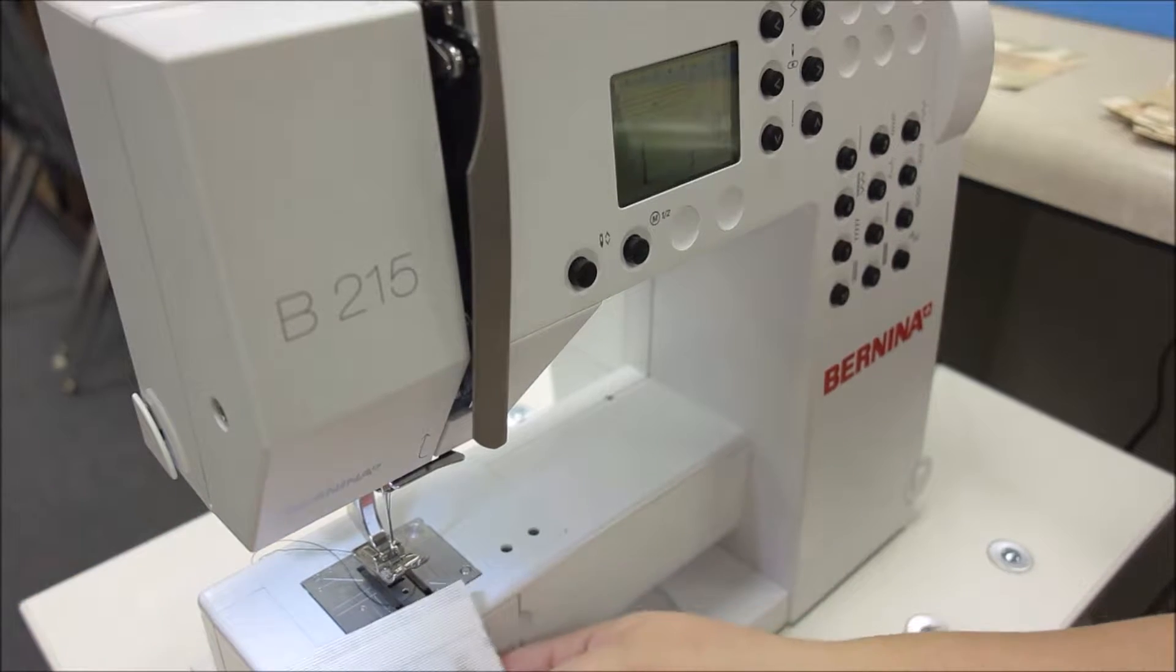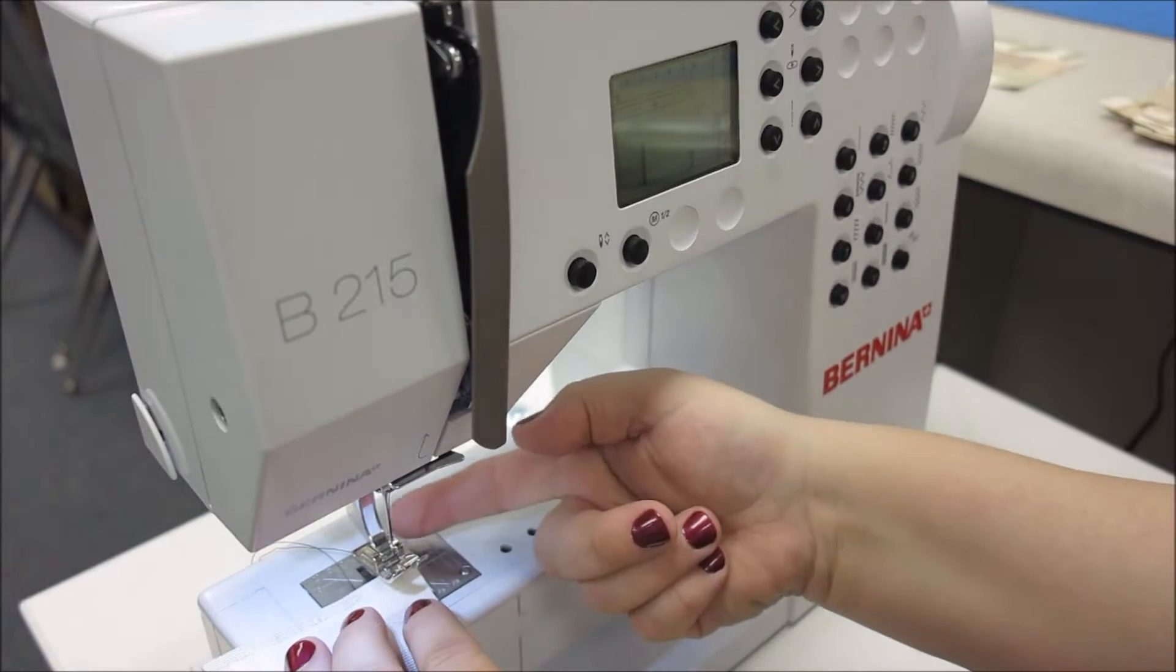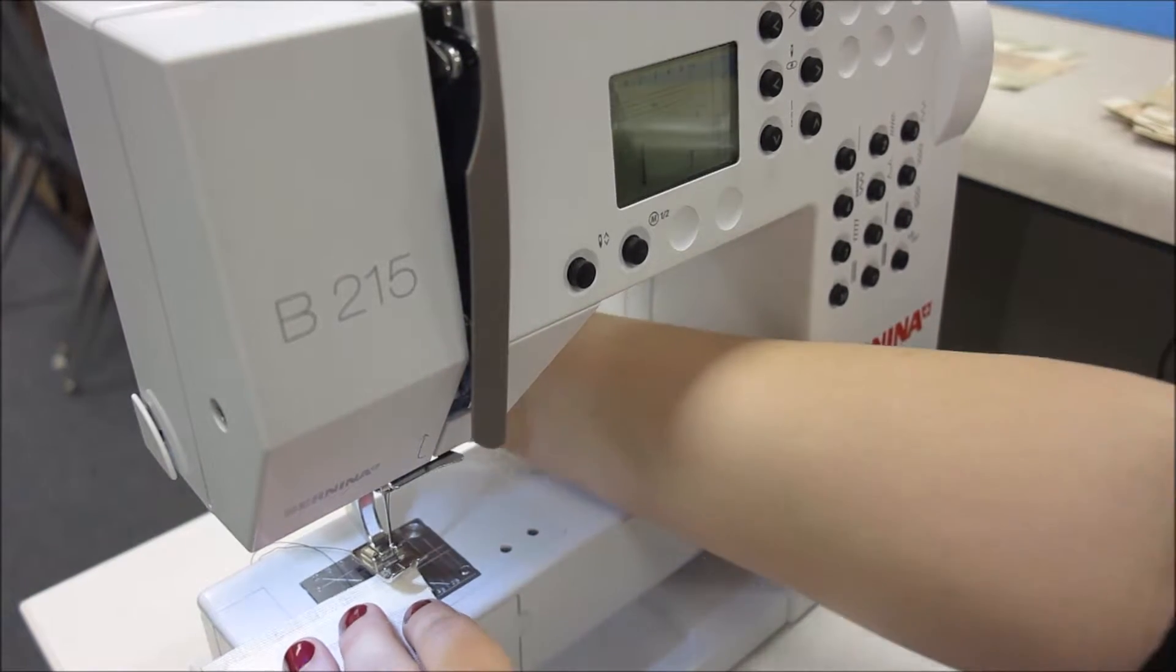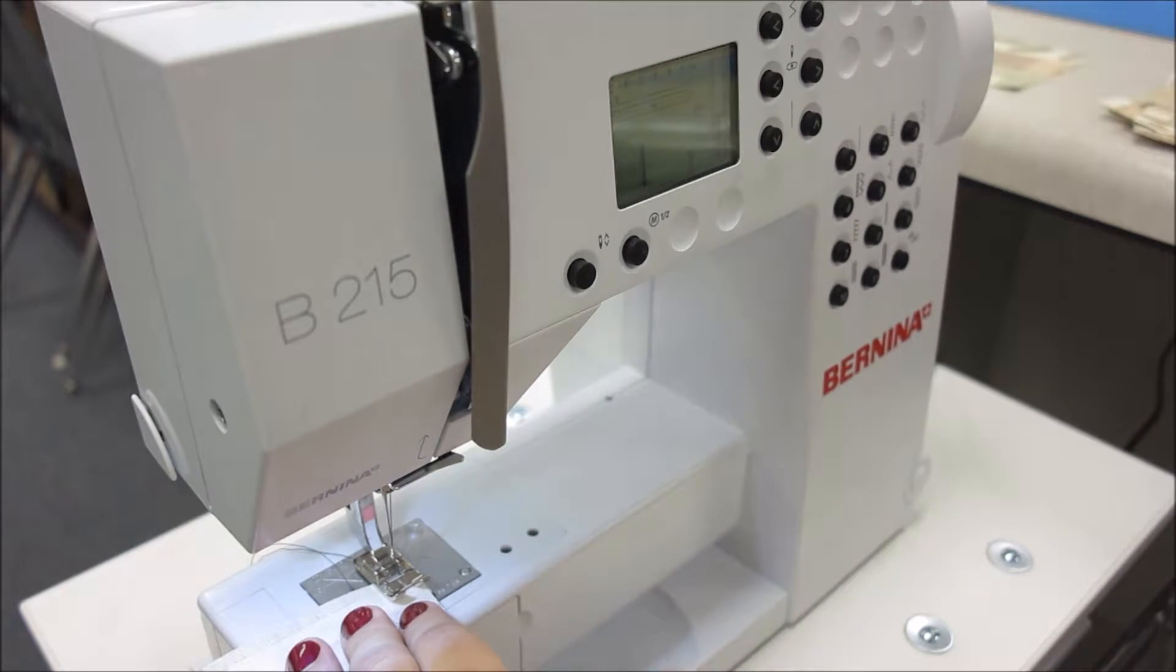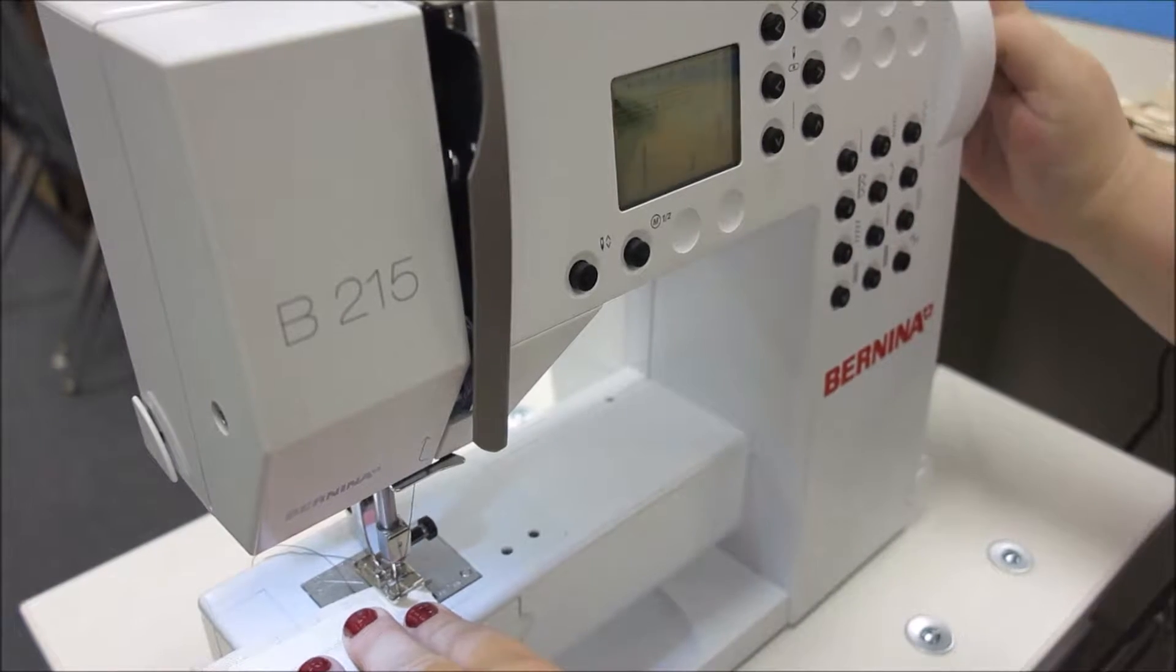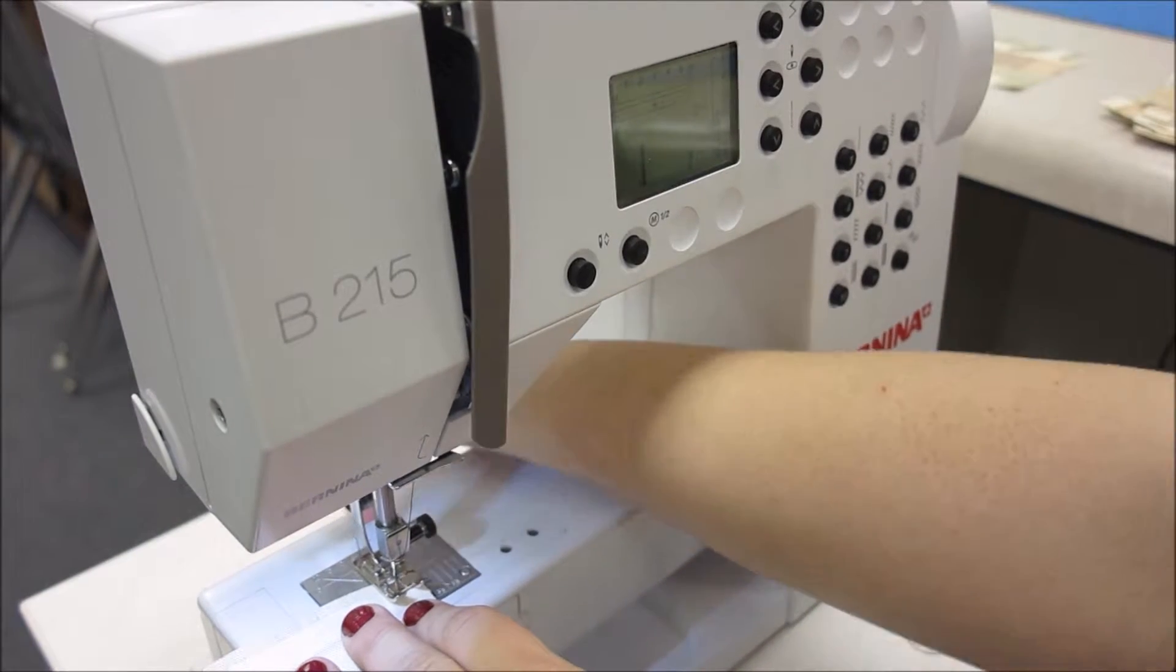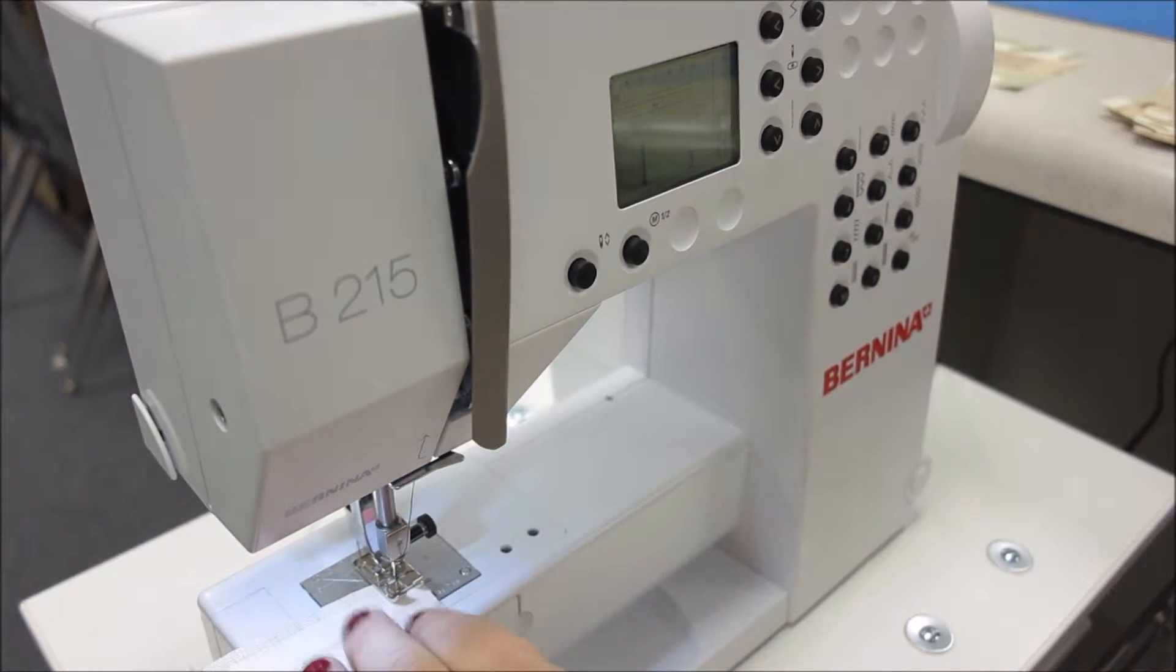Now remember, fabric always goes to the left, so I'm going to line up the right edge of my presser foot with the edge of my fabric, and that's all I need to follow down. So once again, twist the handwheel, put it in your fabric, tug the threads to the back, and begin sewing.